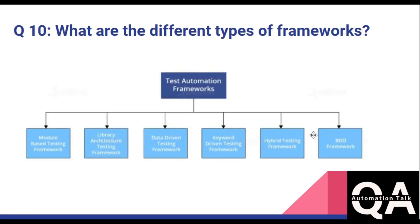The last question is: what are the different types of frameworks used in automation? These include BDD framework, hybrid testing framework, keyword-driven testing framework, data-driven testing framework, library architecture testing framework, and module-based testing framework. The ones most commonly used are data-driven, keyword-driven, BDD, and hybrid — these four are majorly used in practice.